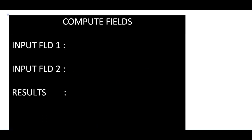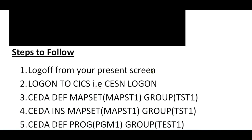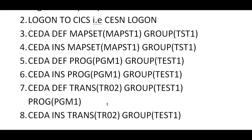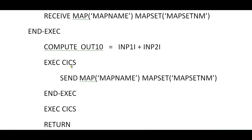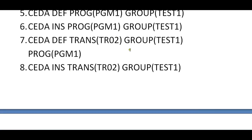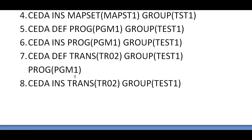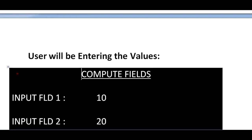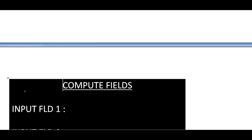To debug the program: first, you define your map and map set using BMS macros. Then log off your present screen and log on to CICS using CESN. Define your map set and install it, then define your program and install your program. Next, define your transaction — for example, TR02 — pointing to Program One, and install the transaction using CEDA and CEMT.